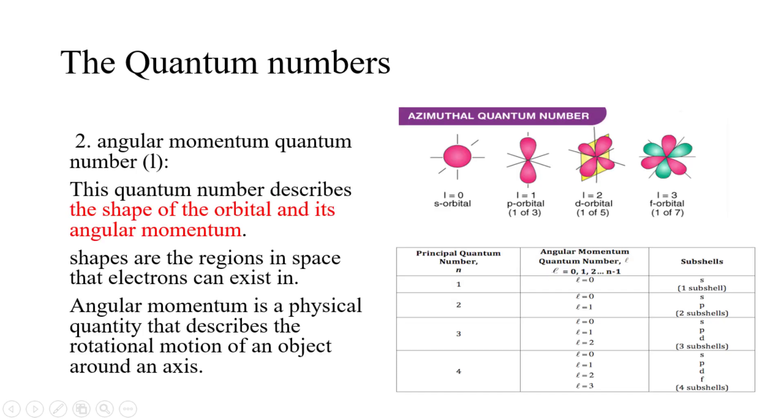Number two: Angular momentum quantum number, known as L. This quantum number describes the shape of the orbital and its angular momentum. Shapes are the regions in space where electrons can exist. Whereas angular momentum is a physical quantity that describes the rotational motion of an object around an axis. The azimuthal quantum number will never be larger than the principal quantum number, and L can take on any value up to n minus 1.